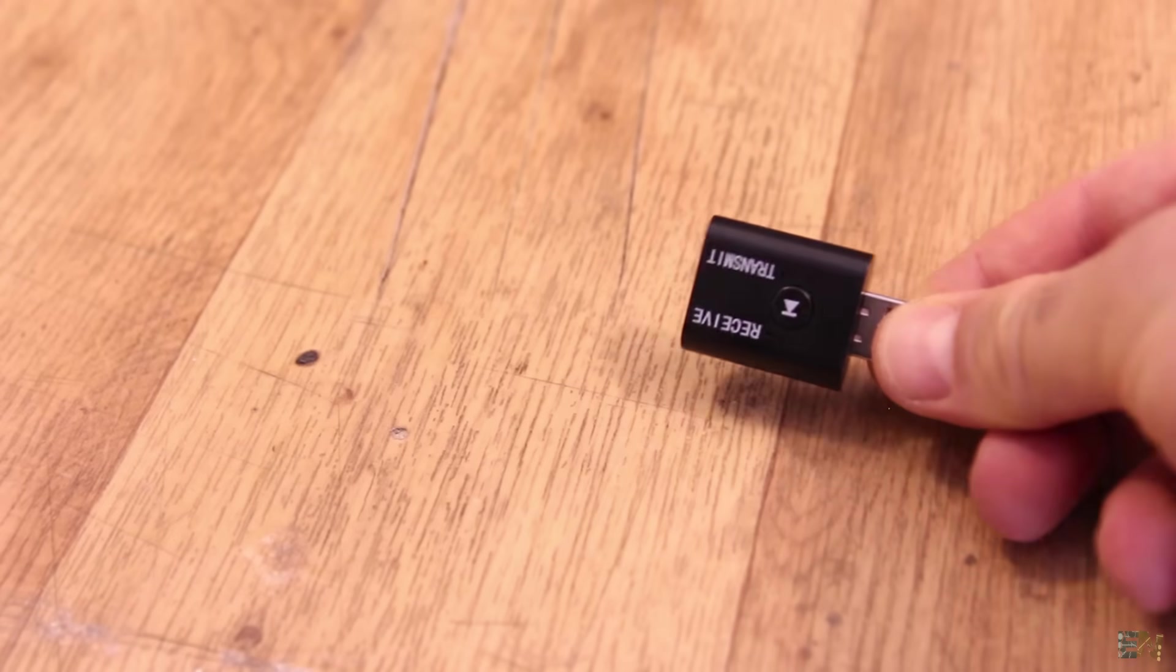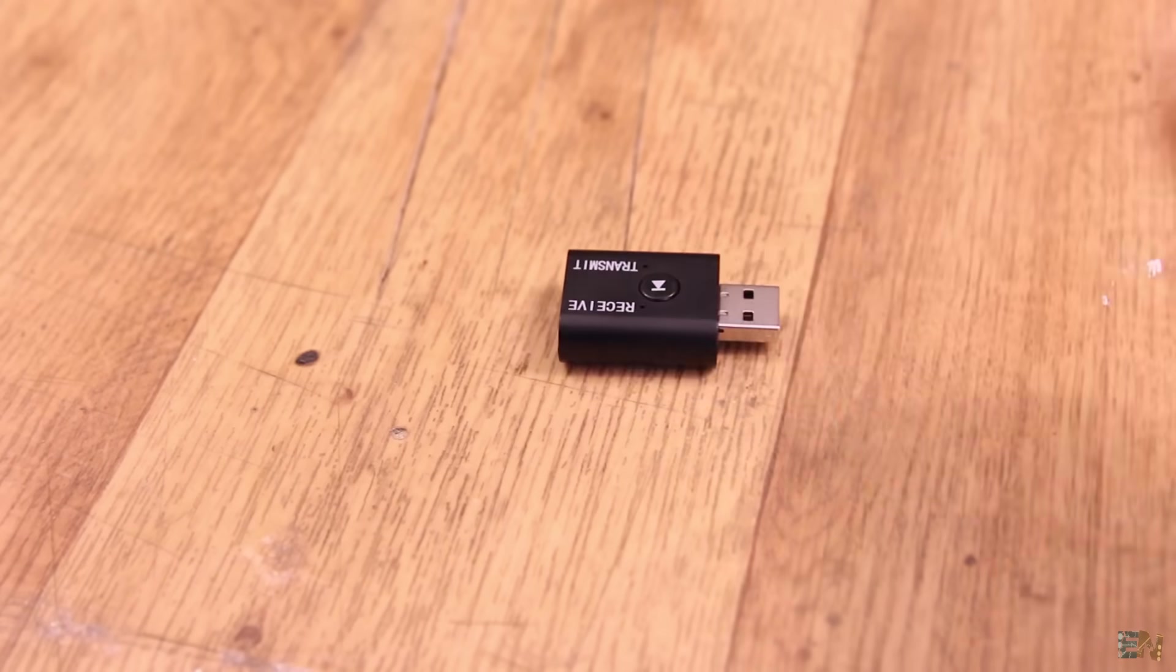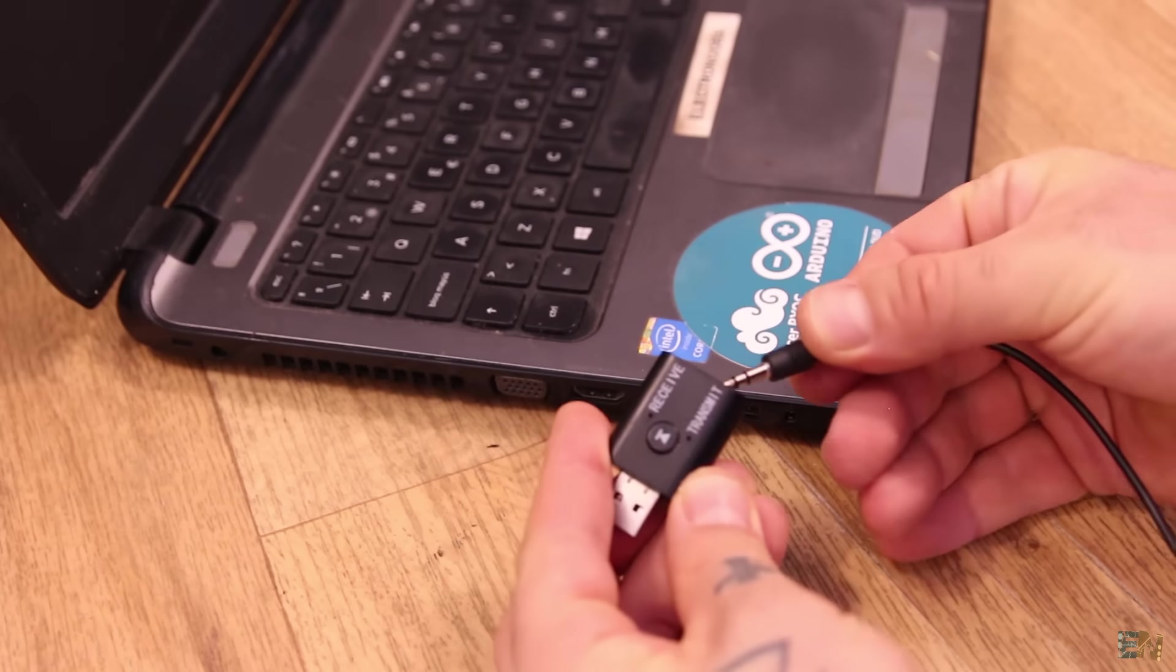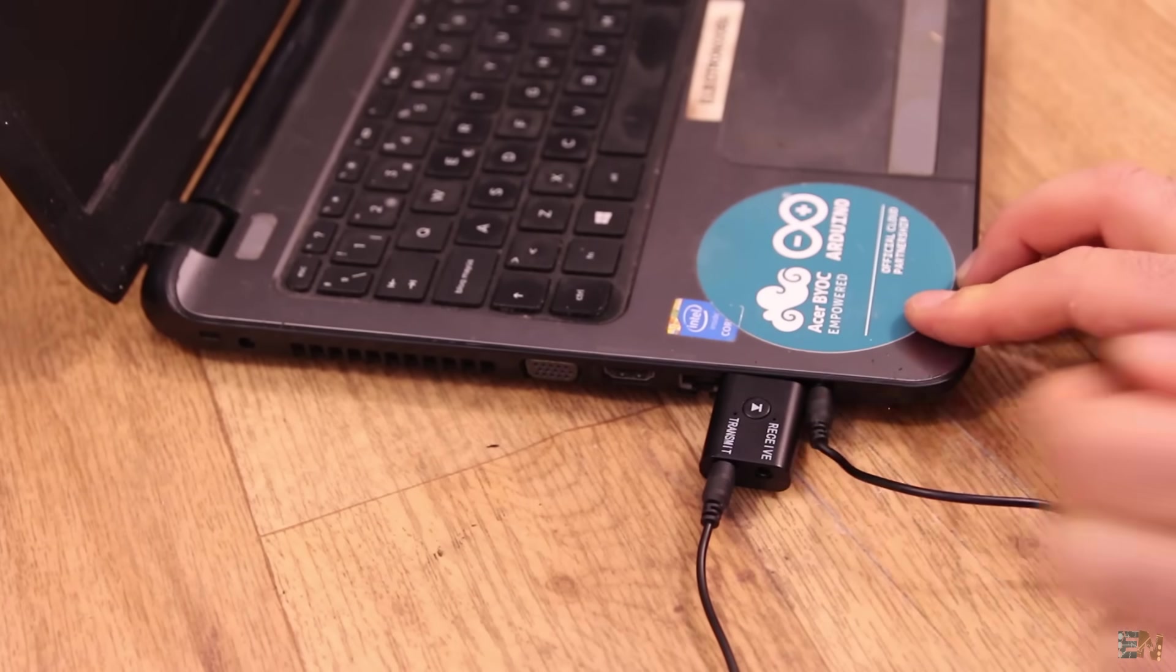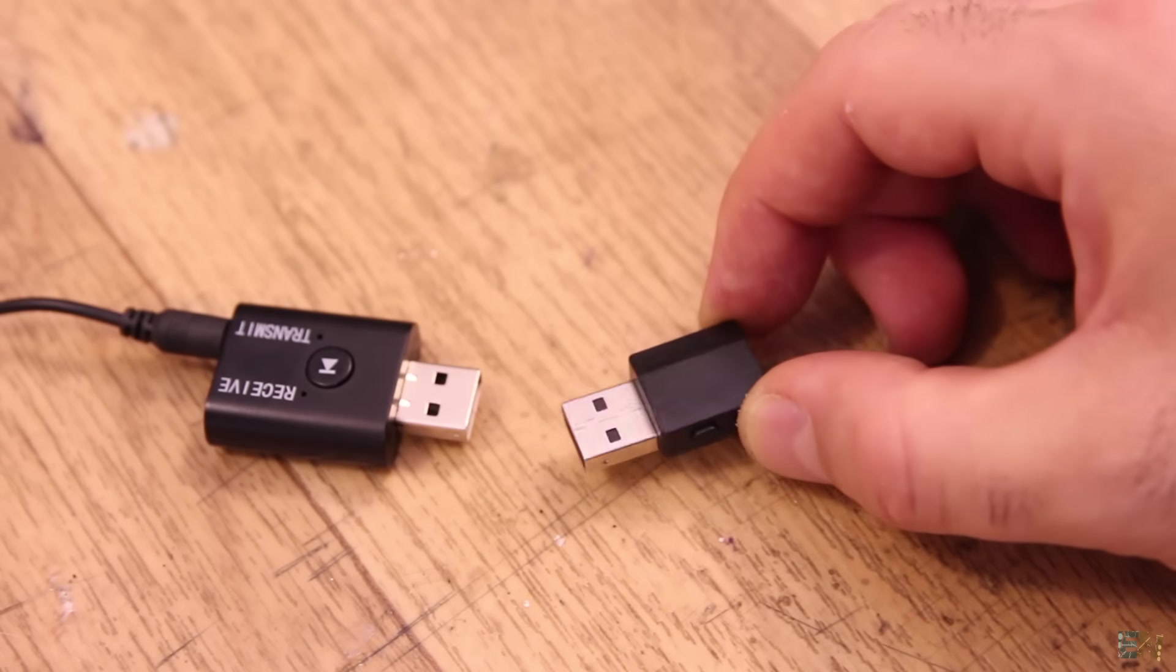So the next module that I've tested was this one. This worked pretty well. It has two jack inputs, one for receiver and another one as a transmitter. But I also found a smaller module.